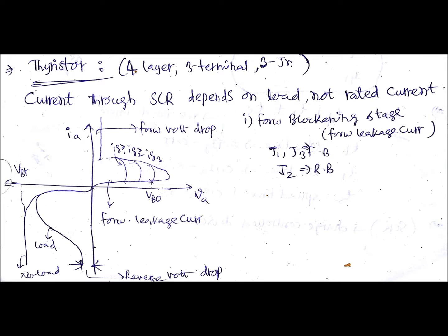The next device is the thyristor, also known as Silicon Controlled Rectifier, or SCR. It is a four-layer, three-terminal, and three-junction device. In some exams or questions, you might be asked 'SCR is a dash terminal device' in multiple choice format.